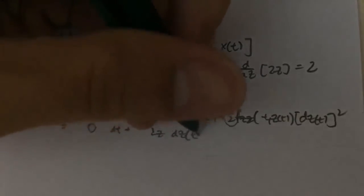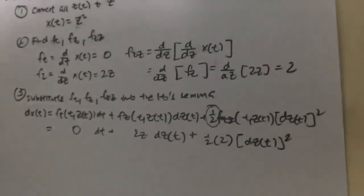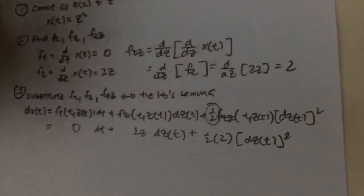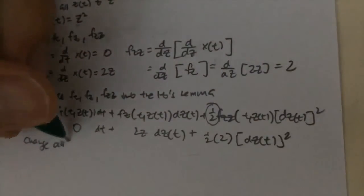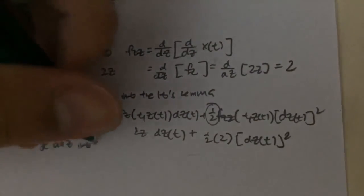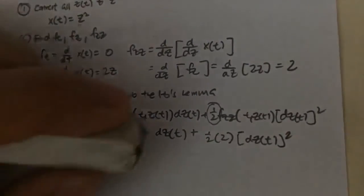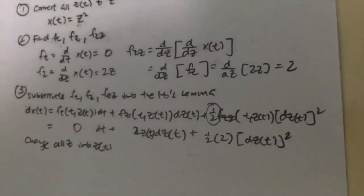dZ(t) plus my F_zz is basically 2, dZ(t) squared. Of course, the next thing that we will do is to change all my Z back into Z(t). So I will change all my Z into Z(t), so this is where we do Z(t). And the rest just keep constant.